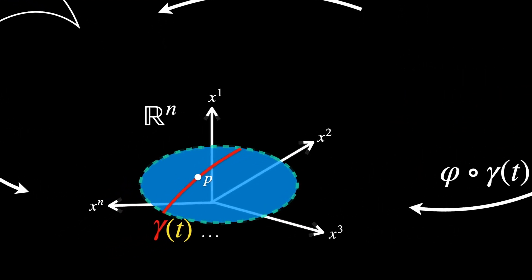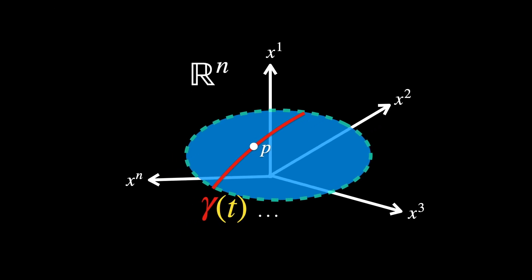Once the curve is mapped to Euclidean space, we can finally compute the velocity vector at point P by taking the derivative of phi composed with gamma of T with respect to T. This derivative gives the velocity vector of the curve at the point P equals to gamma of T0, but now expressed in terms of the local coordinates.